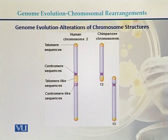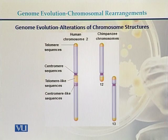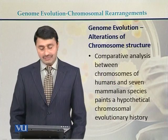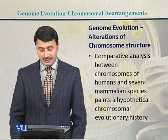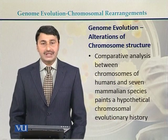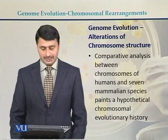So it can be hypothesized that chromosome number 2 of humans evolved by chromosomal rearrangements of chimpanzee chromosomes 12 and 13. A comparative analysis between the chromosomes of humans and seven mammalian species has painted a hypothetical chromosomal evolutionary history.